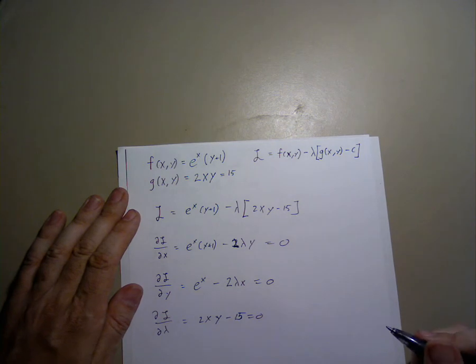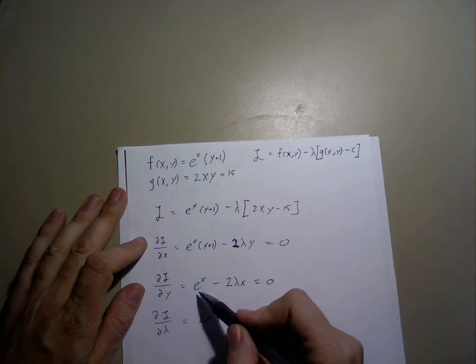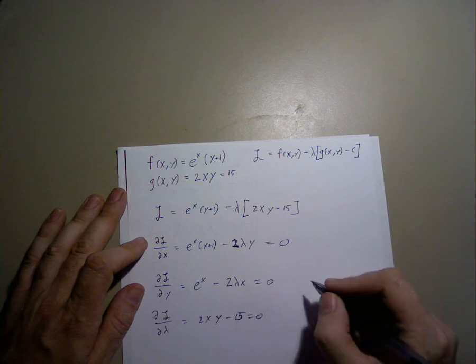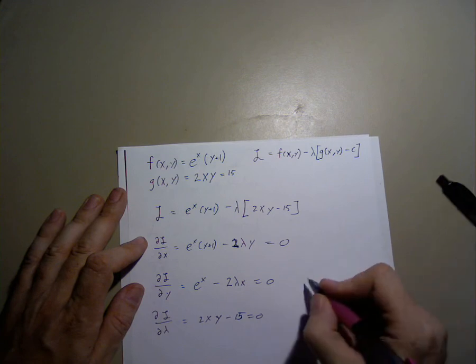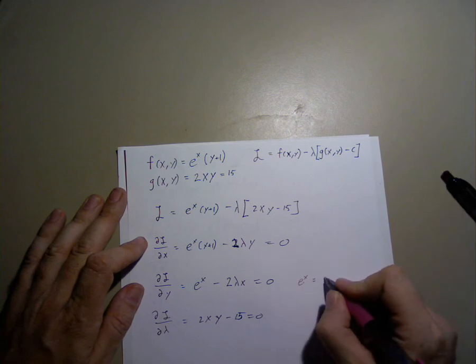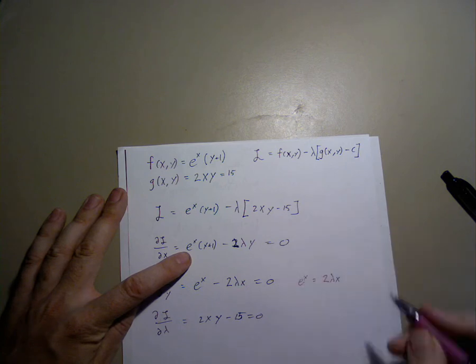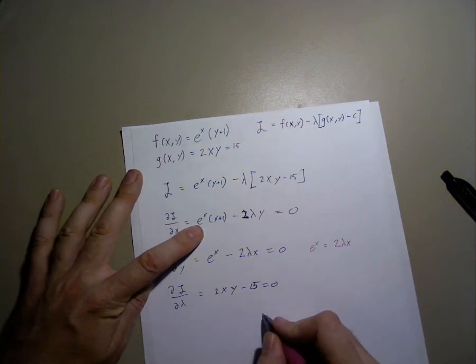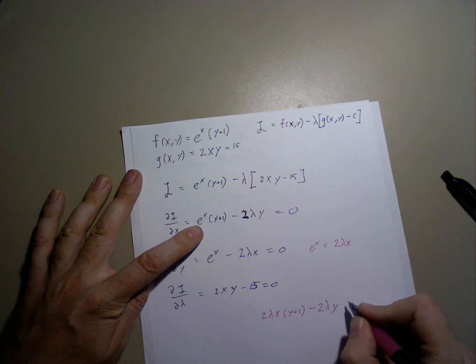In order to solve this, we can first take these two equations. We can substitute, we can solve this for e to the x, e to the x equals 2 lambda x. If we substitute that into our first equation, we get 2 lambda xy plus 1 minus 2 lambda y equals 0.